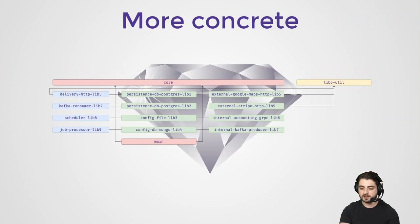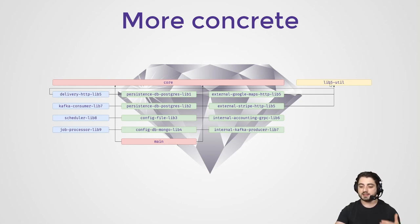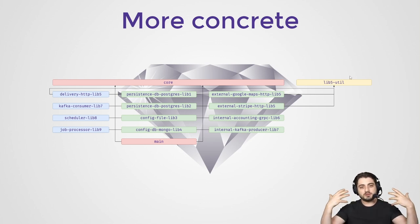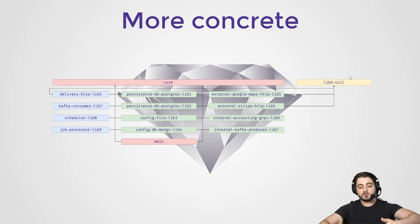Then we had another slide. If you're using the same library all over the place — like for example lib5 here and here — you might have a util, and it technically becomes on level one, but because it compiles in parallel with the core, I prefer to still call it as if it was on layer two.